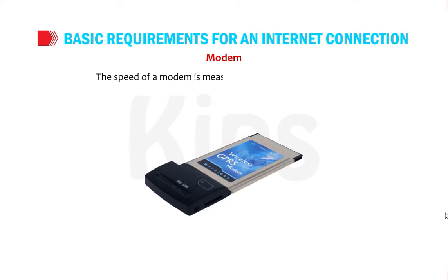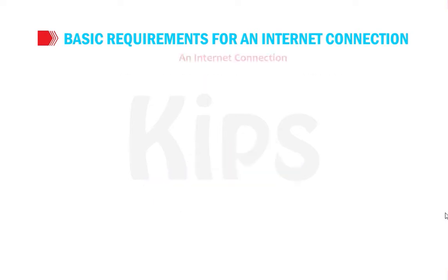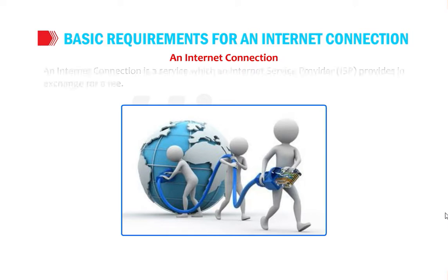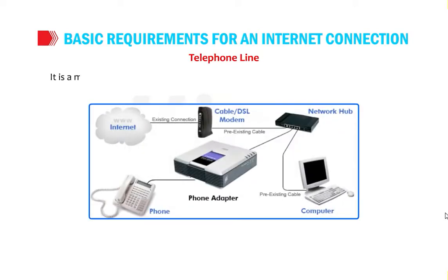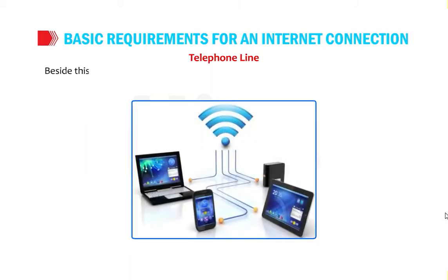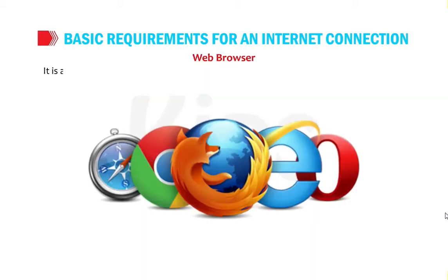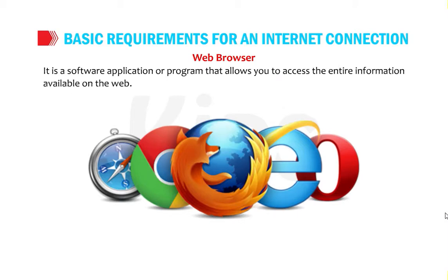The speed of a modem is measured in bps — bits per second. An internet connection is a service provided by an ISP in exchange for a fee, and is a must for accessing the internet. A telephone line is the medium used to connect the computer to an ISP. Besides wired mediums, wireless mediums such as air are also used for data transmission.